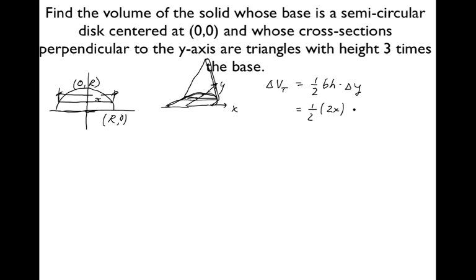What's the height? Three times that — so someone said 6x, that's right. The height is going to be 3 times 2x, which is 6x. So do you see what's going on here? We've got to get x in terms of y — x in terms of y.